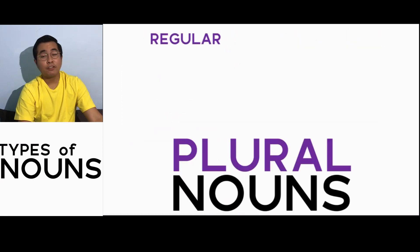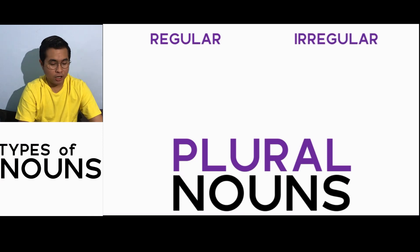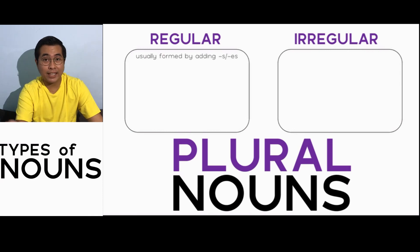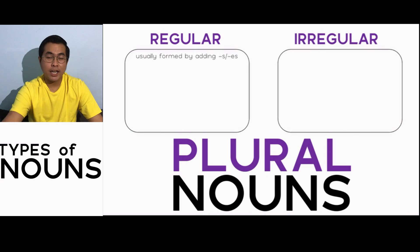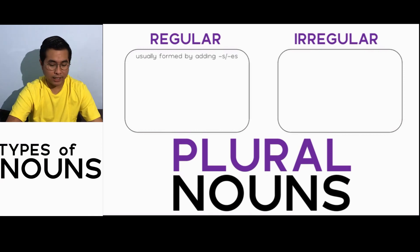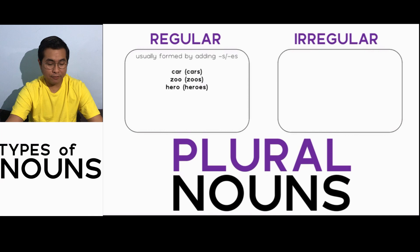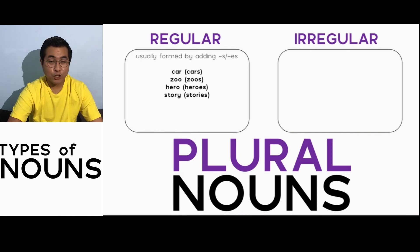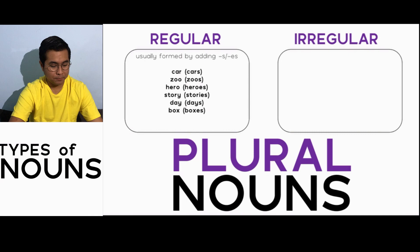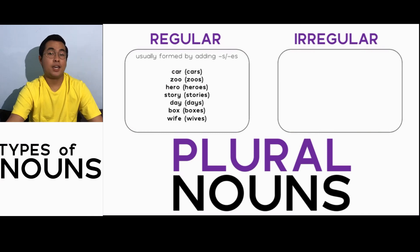Now let's have plural nouns. For regular plural nouns, they are usually formed by adding s or es. We will talk about this more in the third part of the noun series on pluralization, but here is a glimpse: car becomes cars, zoo becomes zoos, hero becomes heroes — note that es is added after hero. Story becomes stories, day becomes days, box becomes boxes, and wife becomes wives. For wife, it ends in fe, so you change the fe to ve and then add s.